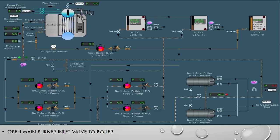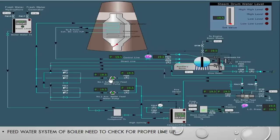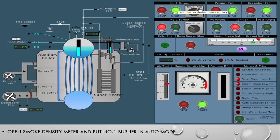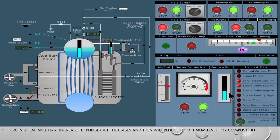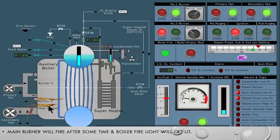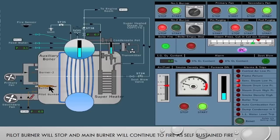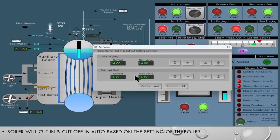So what have we learned? To summarize: after lining up the DO igniter pump and the DO supply pump, we check that the feed system lineup is proper. Then the pilot burner fires first, followed by the main burner which is initially assisted by the pilot burner. The pilot burner goes off once the main burner flame is self-sustainable. The main burner pressurizes the boiler, and after reaching the set pressure, the boiler cuts in and cuts off depending on the control panel settings. Friends, if you have learned something from this video, please do like, share, and don't forget to subscribe.